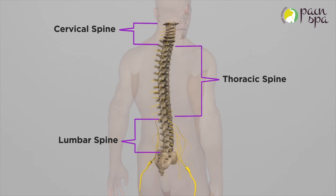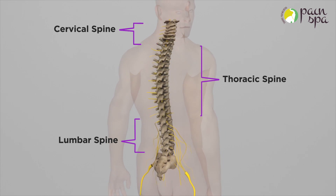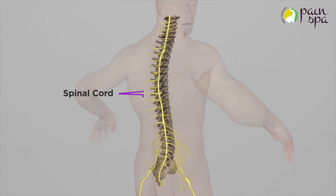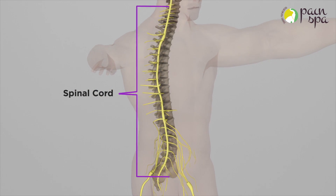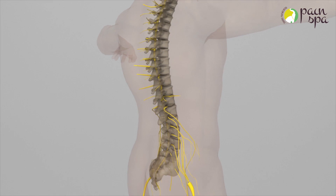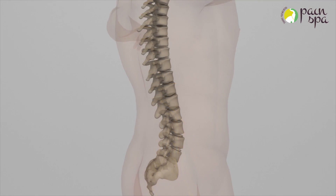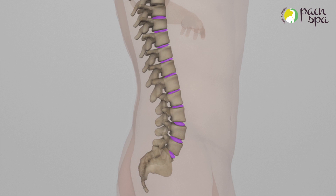The human spine is divided into three sections: the lower spine called the lumbar spine, the middle thoracic, and the upper cervical spine. The bony spine protects the sensitive spinal cord. The bones of the spine have cushion-like structures between them called the intervertebral discs.